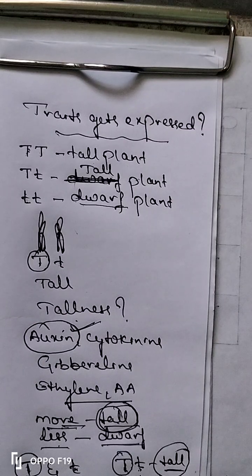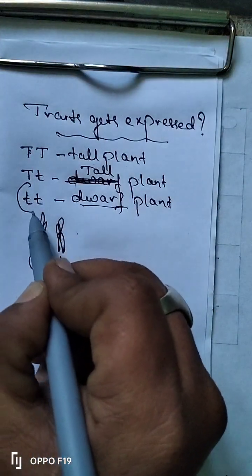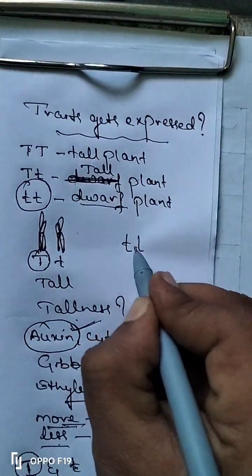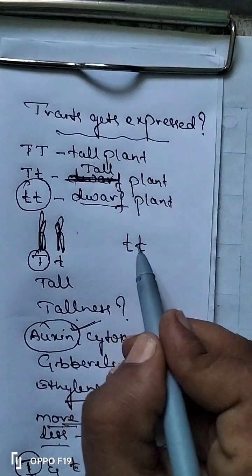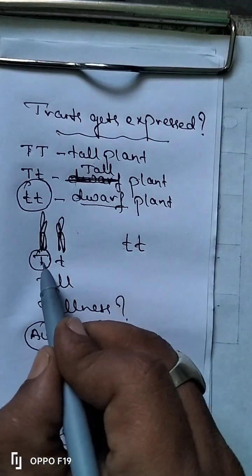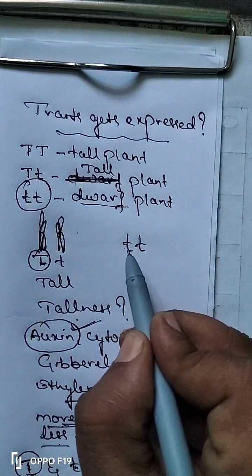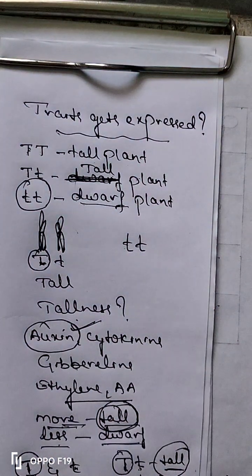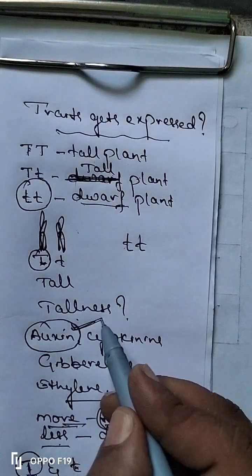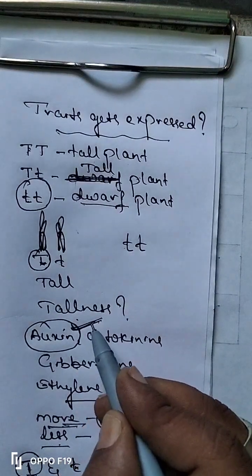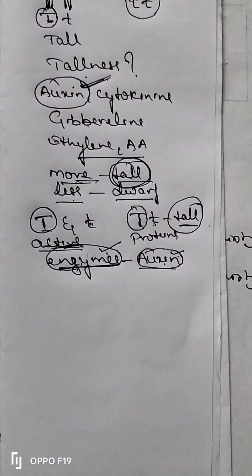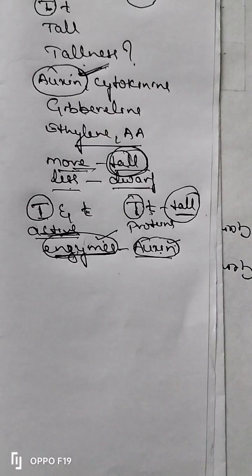Now, if a plant has a set of chromosomes small t and small t, both small t's are inactive — they are not as active as capital T. Since they are inactive, they cannot produce more and more enzymes. Since they cannot produce more enzymes, they cannot produce more and more axine. Since they cannot produce more axine, the plant will grow as a dwarf plant. That means the plant never grows as a tall plant; it grows as a dwarf plant. This is how you explain how the traits get expressed.